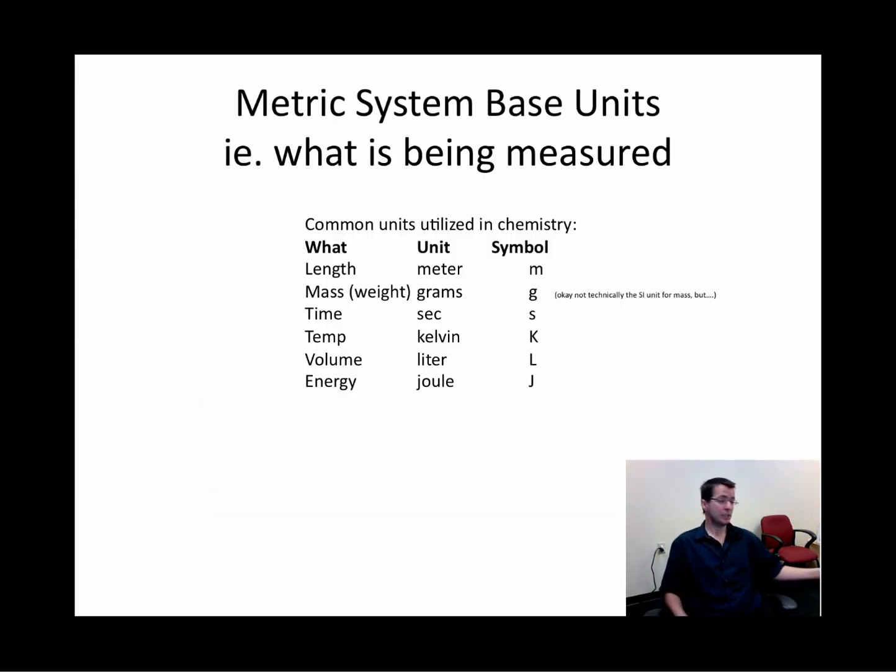What else? What else you need to start memorizing? Metric system. All right, we start using the metric system. What we really care about is the base units as representatives of what is being measured. So the metric system, the ones we really care about are length, the meter, mass, which the SI unit technically isn't the gram, it's the kilogram, but we will be using the gram as a measure of mass. The time for seconds, temperature in Kelvin, though sometimes centigrade is often used. Volume in liters and energy in joules. These are the SI units. These are the units we care about.